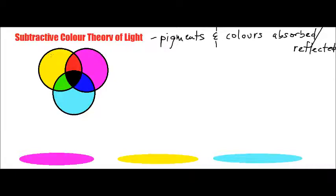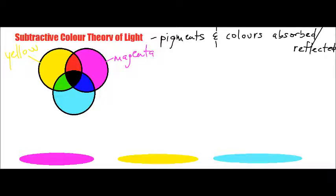If you look at these circles I'm showing you — where we're dealing with pigments, dyes, paints, and so on — we're talking about pretty much using colors that are opposite. Now, the primary colors are as follows: yellow is a primary color, magenta is another primary color, and lastly, cyan is the third primary color with regards to the subtractive color theory of light.